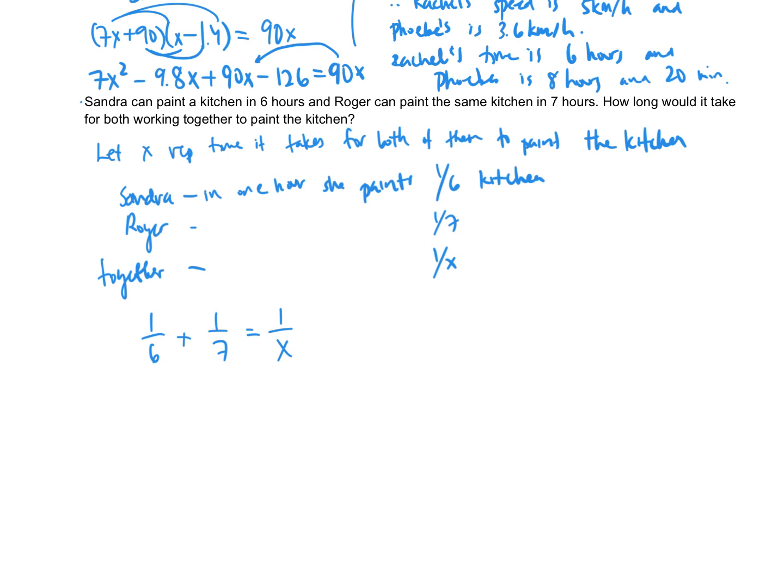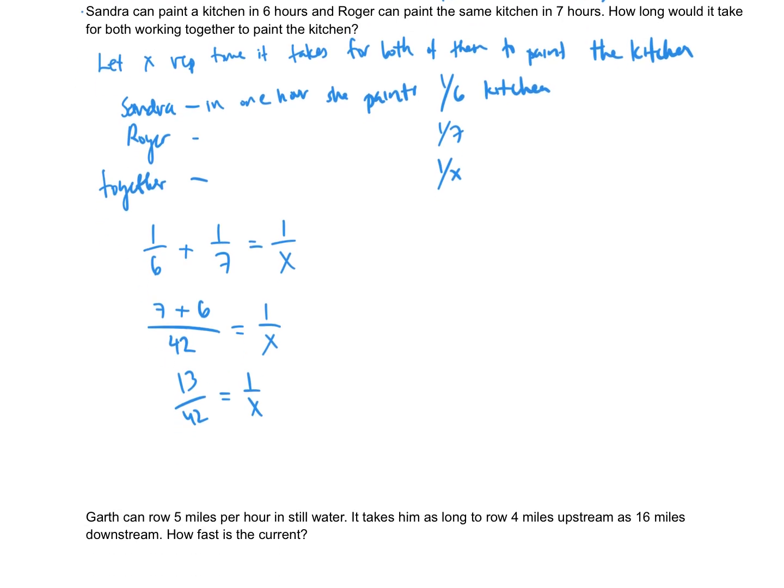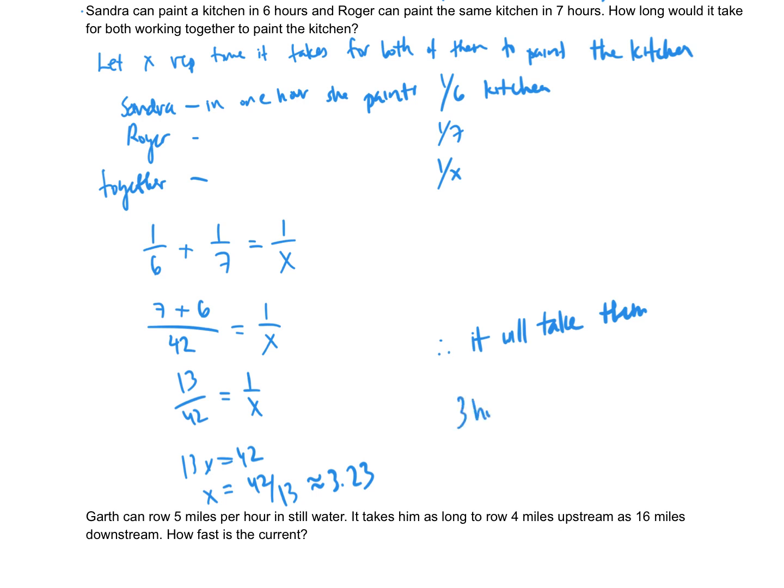And there's our equation. It's a lot easier than the previous one. Now let's solve it. I'll get a common denominator. I'll multiply the first fraction by 7, the second by 6, and the common denominator is 42. So that's 13 over 42 equals 1 over x. And when we cross multiply, we'll have 13x equals 42. Divide both sides by 13, and there we are. This is approximately 3.23 hours, or 3 hours. And if we do 0.23 times 60, we'll get around 14 minutes. Therefore, it will take them 3 hours and 14 minutes to paint.